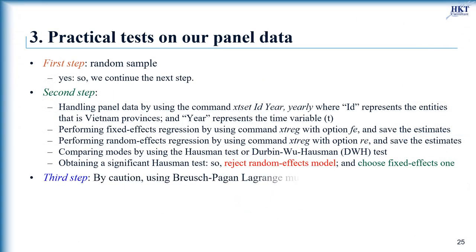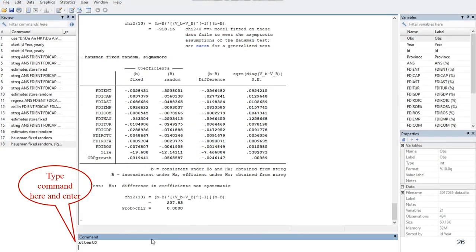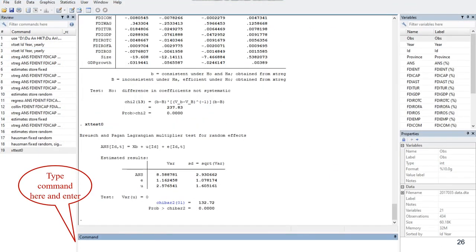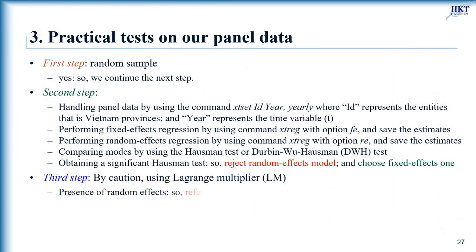By caution, it is necessary to test the presence of random effects using the Breusch-Pagan Lagrange multiplier test. Type xttest0 then enter. The result of this test is significant, indicating random effects and refusing the pooled OLS model. As the Hausman test has eliminated the random effects model and the Lagrange multiplier has refused the pooled OLS model, we select with confidence the fixed effects model.